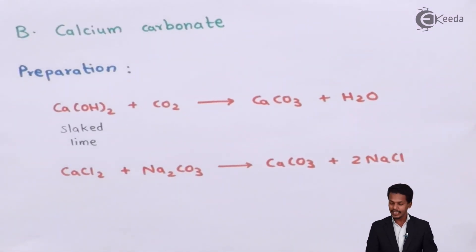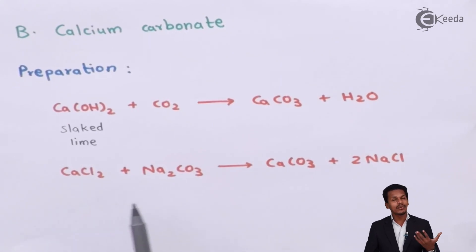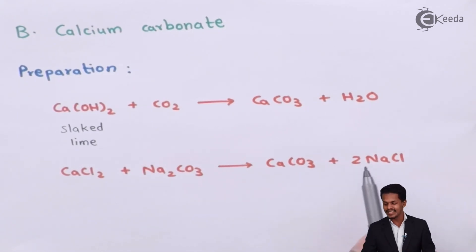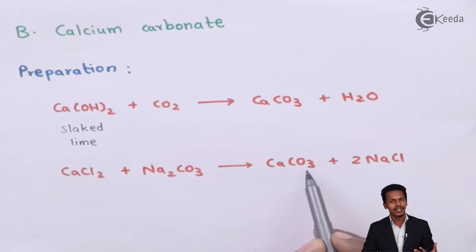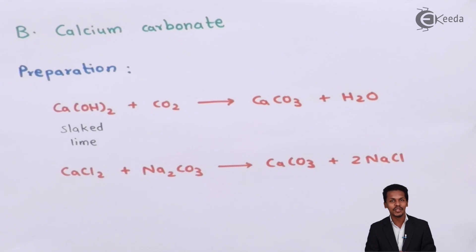Another method to prepare calcium carbonate is using calcium chloride. If we take calcium chloride and react it with sodium carbonate, the reaction produces CaCO3 while 2NaCl is also produced in the solution. Since NaCl is soluble in water, the only thing we get in solid form — as a precipitate — is CaCO3. This is how we can form calcium carbonate using calcium chloride.